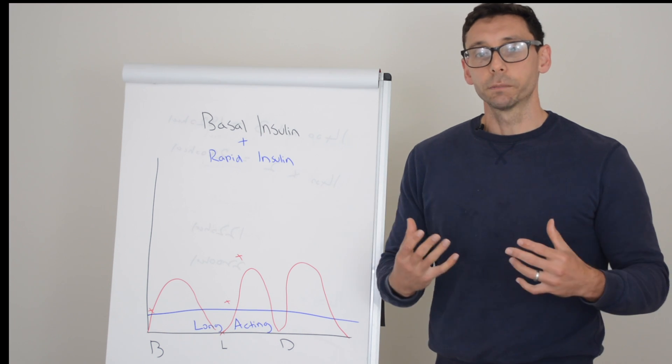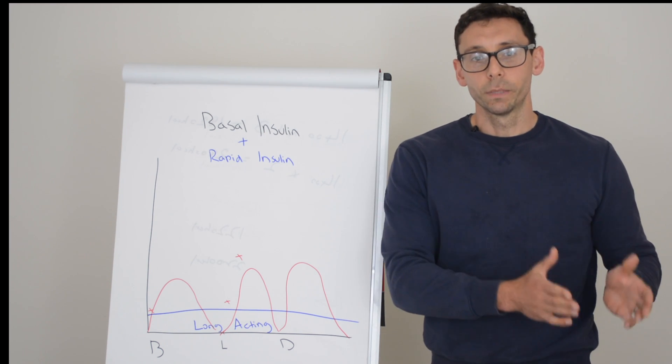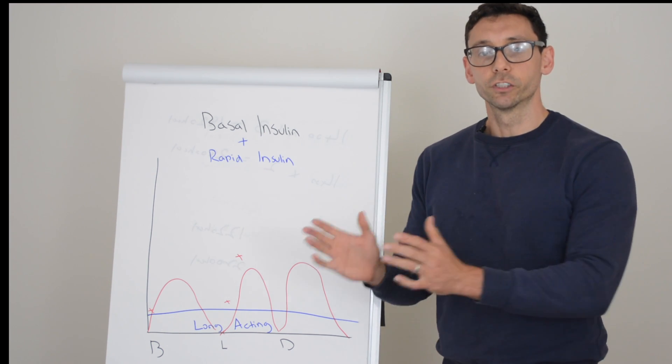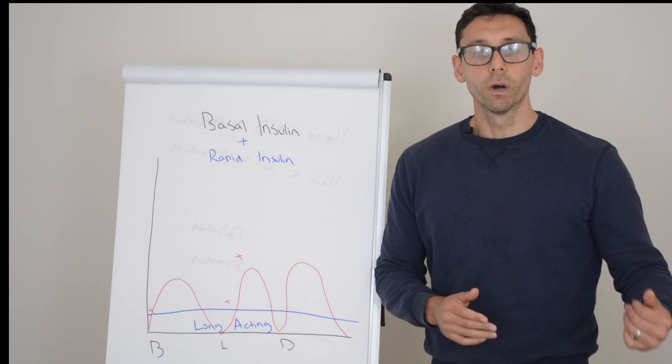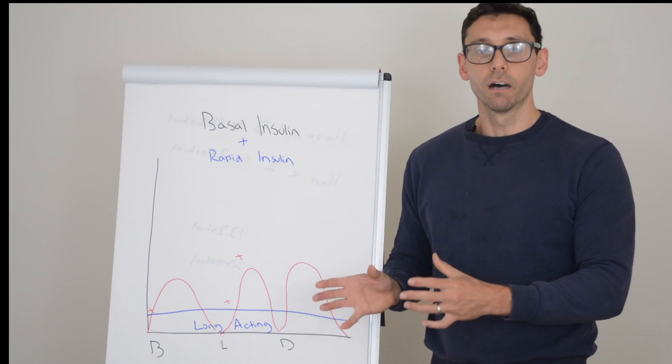As a basic principle, you might take so many units of rapid acting insulin for so many grams of carbohydrates eaten. For example, you'll take one unit for every 10 grams of carbohydrate taken.